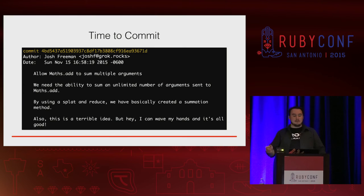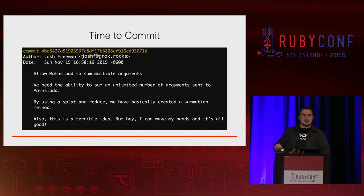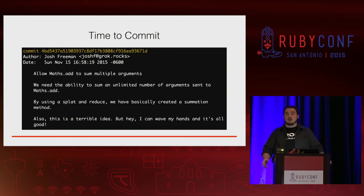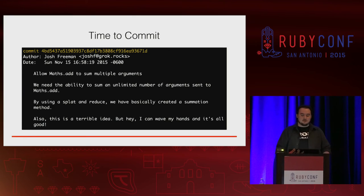Now I'm going to add a commit message that has some problems. First, 'allow math.add' — that's not typically the convention in Ruby for methods; it should really be math#add with the octothorpe. And that last line — I'm being kind of funny and cheeky. You can be funny in your commit messages; however, if you're not explaining why you're being funny, you're doing your team and your future self a disservice. We're going to fix that in a bit.